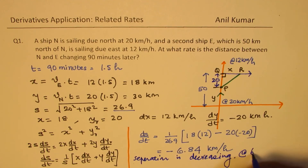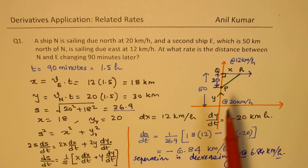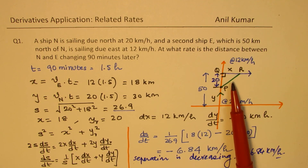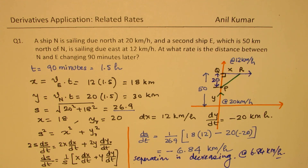So that is how we solve it. The concept is the same in both cases: at that instance, relate X, Y, and the separation using the Pythagorean theorem to get the formula, then apply it directly to find the value. This is especially helpful for multiple choice questions. I hope you find it interesting and useful — feel free to write your comments, share your views, and if you like and subscribe to my videos, that'd be great. Thanks for your time and all the best.